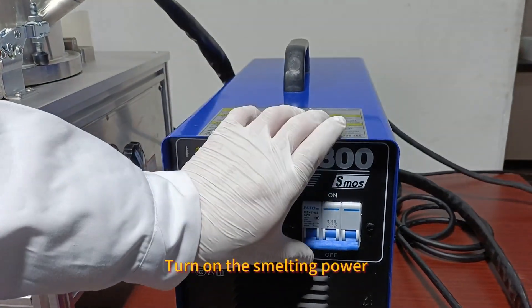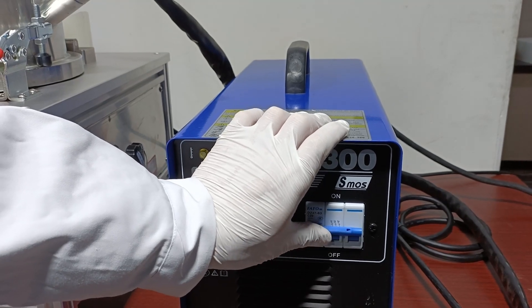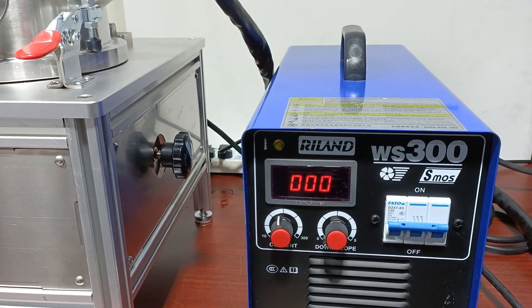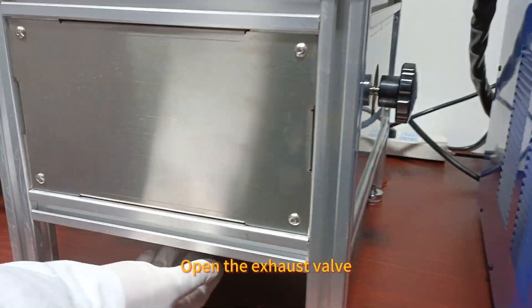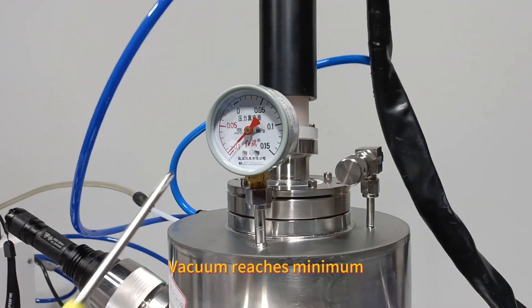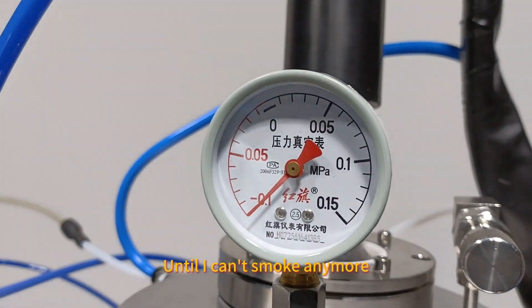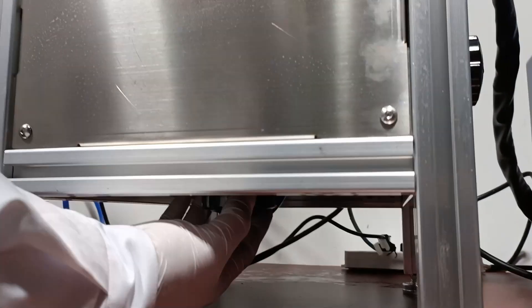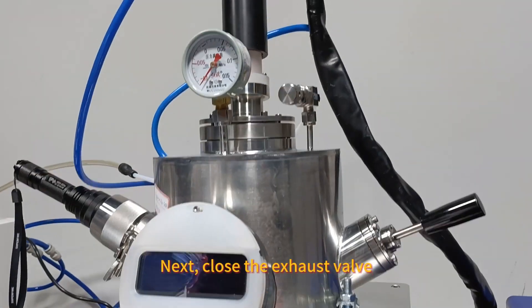Turn on the smelting power. Open the exhaust valve. Vacuum reaches minimum until it can't pump anymore. Next, close the exhaust valve.